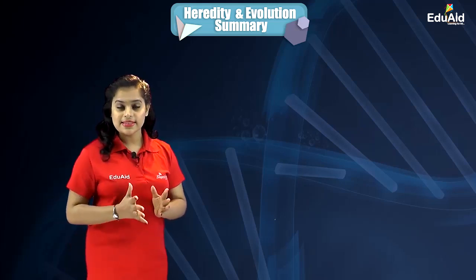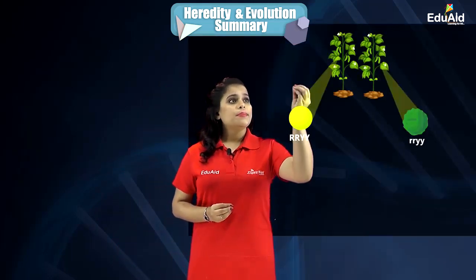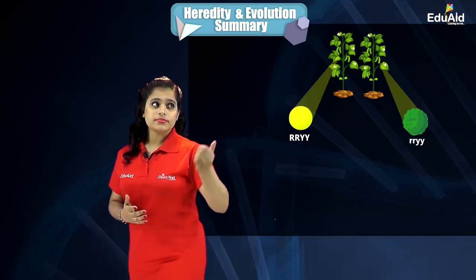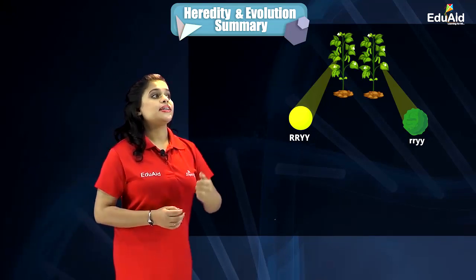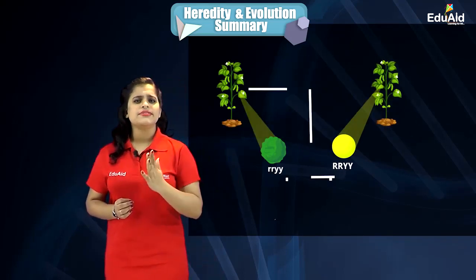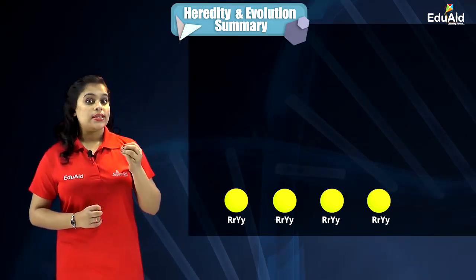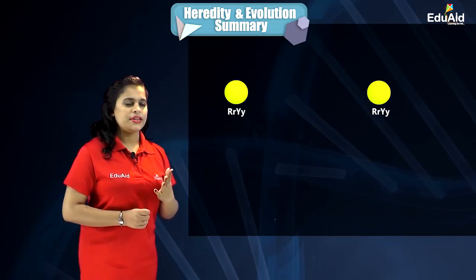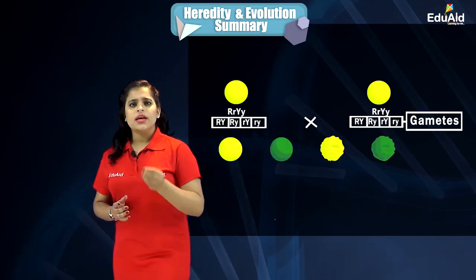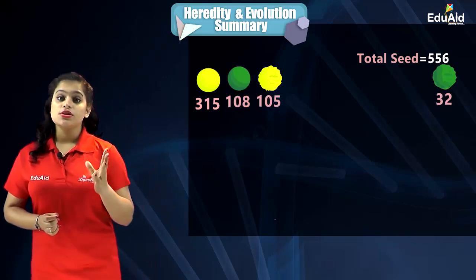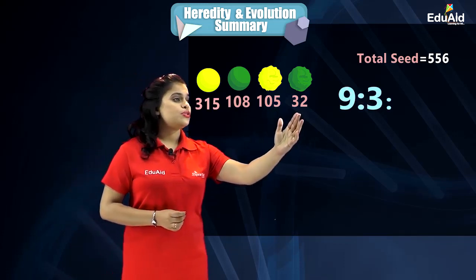In the second filial generation, in addition to the original parental characteristics, some new combinations are also seen. For example, the original parental traits were round and yellow seeds and wrinkled and green seeds. In F1 all seeds were round and yellow, whereas in F2 new combinations like round and green, and wrinkled and yellow also appeared — a total of four combinations in a ratio of 9:3:3:1.